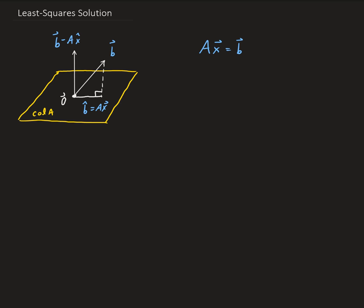In this lesson, I'm going to talk about the least square solution. So sometimes if we have a system, like a matrix system, where we have AX equals B, it may not be possible to solve that, especially if the vector B is not in the column space of A — then there's no solution.